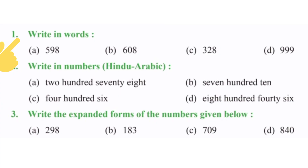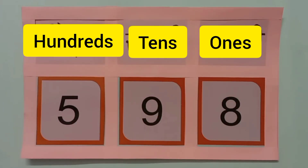Dear students, our first question is: write in words. The given numbers are in figures. We will write these numbers in words. First part of this question is 598. This number consists of 3 digits. The first digit is of the ones place, the second is of the tens place, and the third is of the hundreds place.